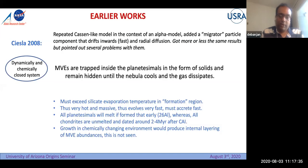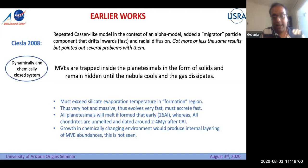The second problem Ciesla 2008 pointed out about the Cassen model is that to make it work, you have to have a very hot inner nebula — the whole inner nebula has to be at a temperature above the silicon condensation temperature of around 1400 to 1450 K. Haas et al. 2003 pointed out that if that were the case, you should not see any pre-solar grains, but we already do see pre-solar grains, which would not survive in those high-temperature environments.